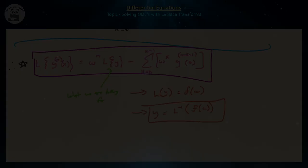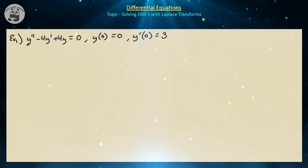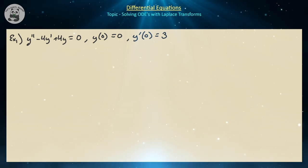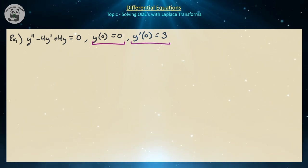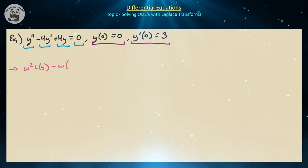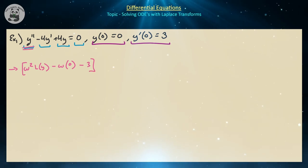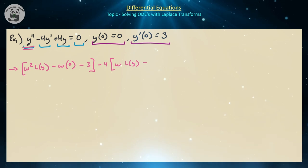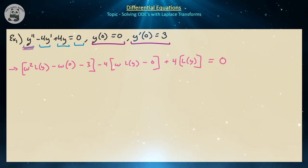Let's apply this to a second order constant coefficient linear homogeneous ODE: y double prime minus 4y prime plus 4y equals 0, with y of 0 equals 0 and y prime of 0 equals 3. Taking the Laplace transform of each term, L{y double prime} gives omega squared L{y} minus omega times 0 minus 3; the L{minus 4y prime} term gives minus 4 times (omega L{y} minus 0); and plus 4 L{y}, all equal to 0.